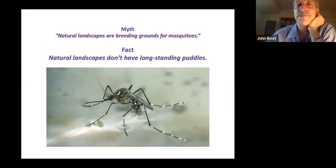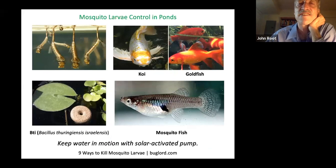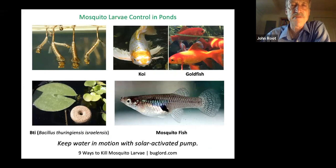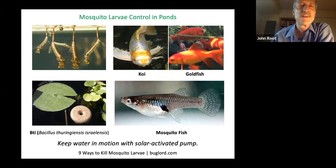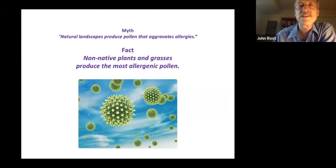If you provide your pond with a solar-activated pump, that will deal with the mosquito problem. You can also stock the pond with koi, goldfish, or mosquito fish. There's a bacterium called BTI — Bacillus thuringiensis israelensis — they're called mosquito dunks and mosquito bits, and they're very effective at eliminating mosquito larvae. Allergenic pollen is not an issue in natural landscapes because it's actually the non-native plants and grasses that produce the most allergenic pollen — the weeds such as ragweed.